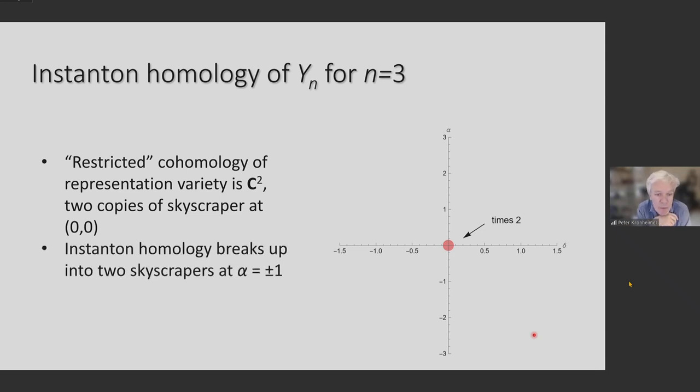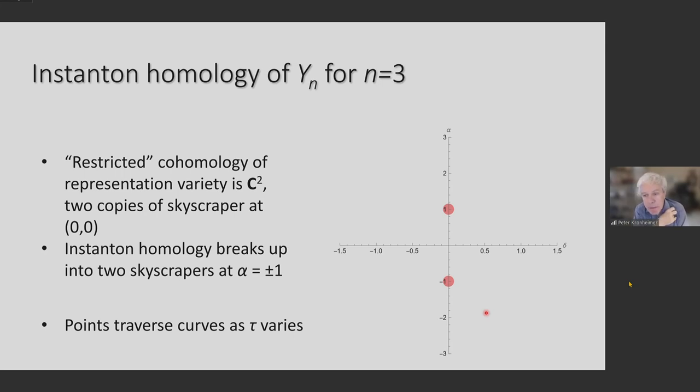According to Ethan Street's calculations, what happens when you take the instanton homology? That's a deformation of this picture. Those two copies of the skyscraper sheaf, they just kind of move. And there they are now, with eigenvalues of alpha being one and minus one, and eigenvalue of delta still being zero. So two skyscraper sheaves at those two points. Already in this very simple case, it's quite interesting to ask what happens in the local coefficient system, when you vary tau. The answer is that those eigenvalues move in the plane, and they move along these curves. That's actually some smooth rational quartic curve in the plane. And as I vary tau, those green dots, that's what happens when tau is 0.6. Tau equals one is trivial coefficients, that's where the pink dots are. And as you vary tau away from one, the eigenvalues move along these algebraic curves.